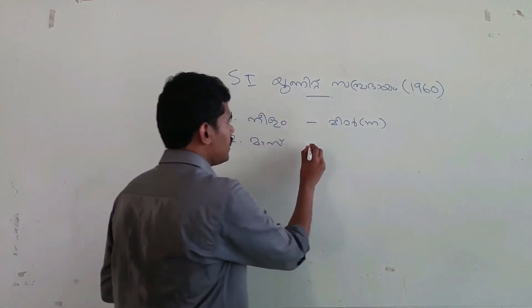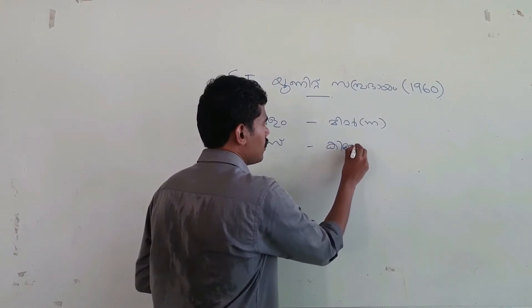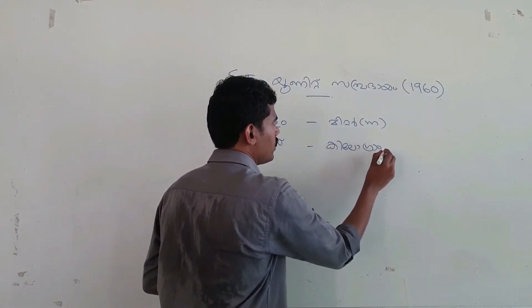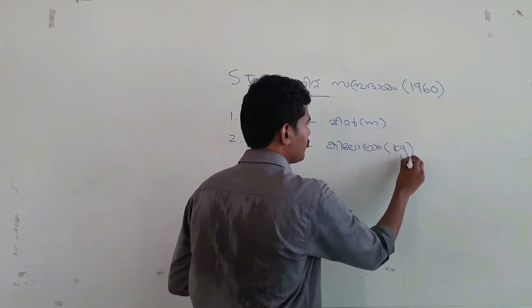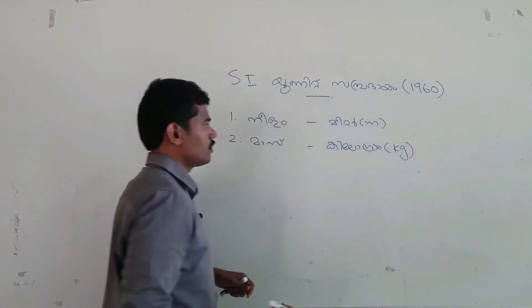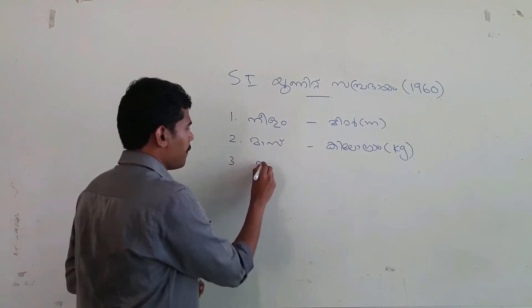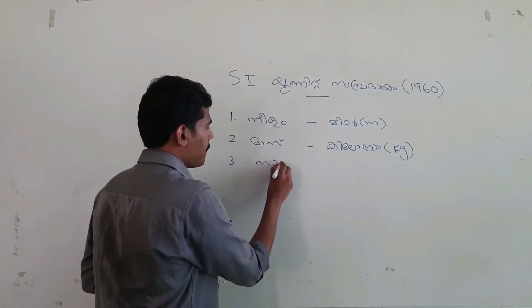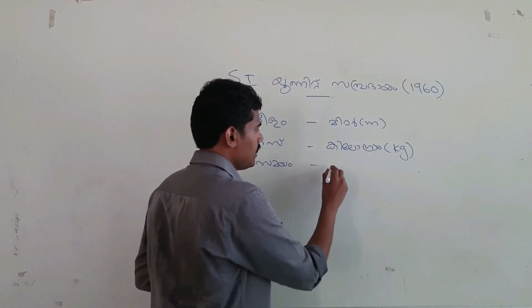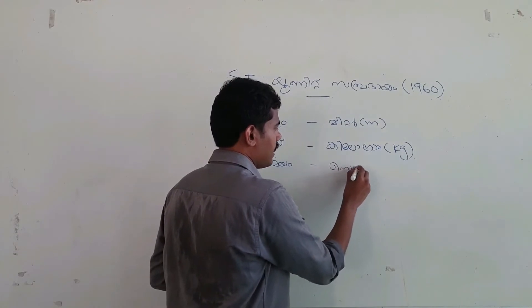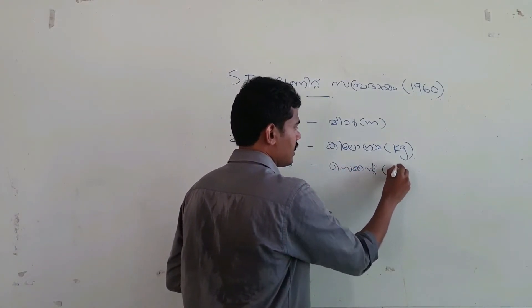The SI unit of mass is the kilogram. Since we all need a unit of mass, it is the kilogram. The SI unit for time is the second.